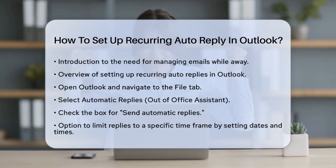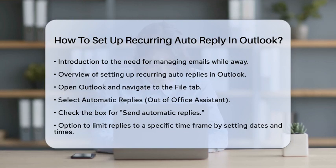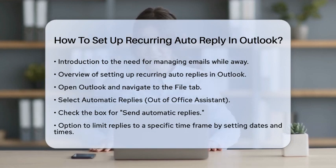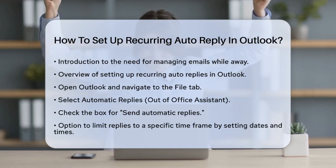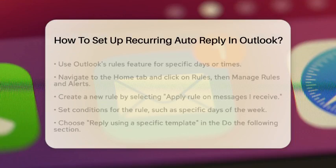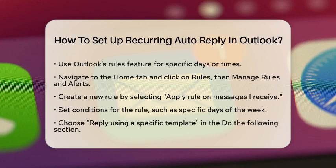First, you will want to start with the basic setup in Outlook. Open your Outlook application and go to the File tab. From there, select Automatic Replies, which is also known as the Out-of-Office Assistant. You will see an option to check the box that says Send Automatic Replies. If you want to limit the replies to a specific time frame, you can select Send Replies only during this time period and set the dates and times accordingly.